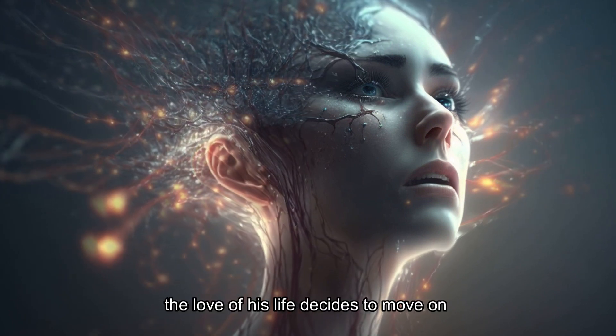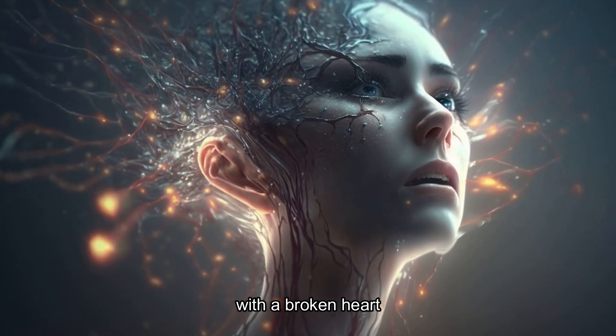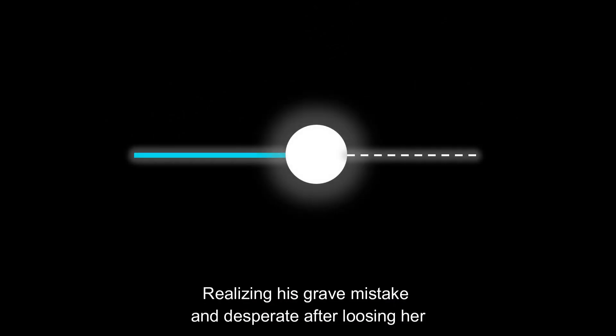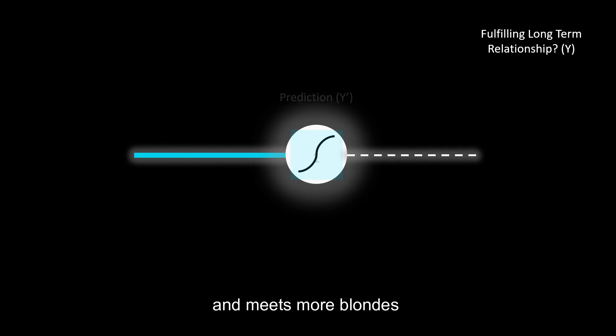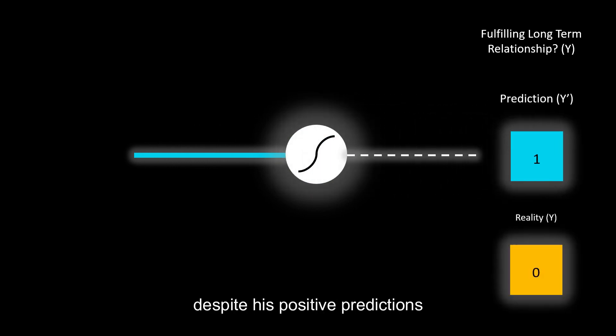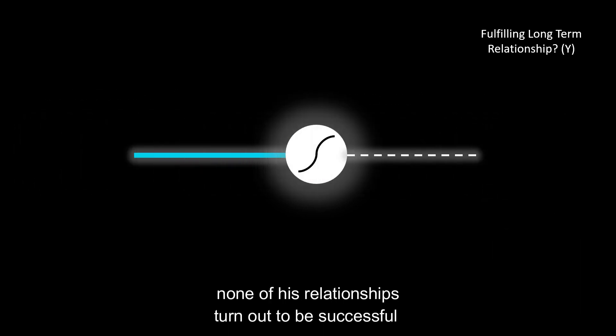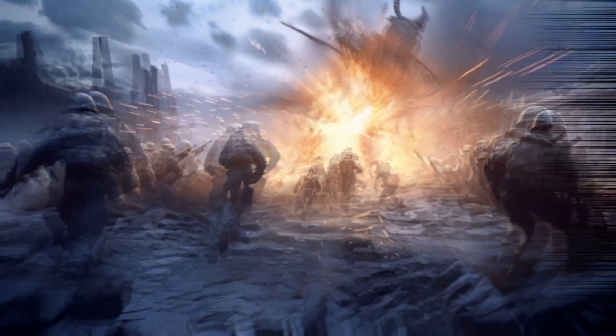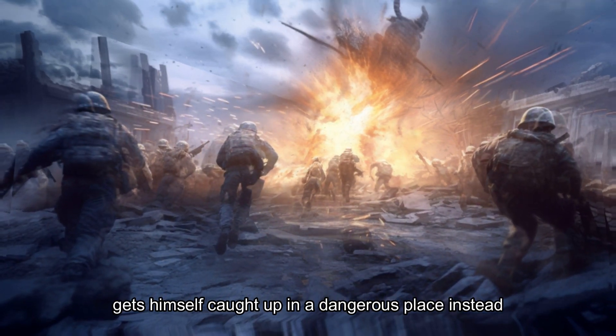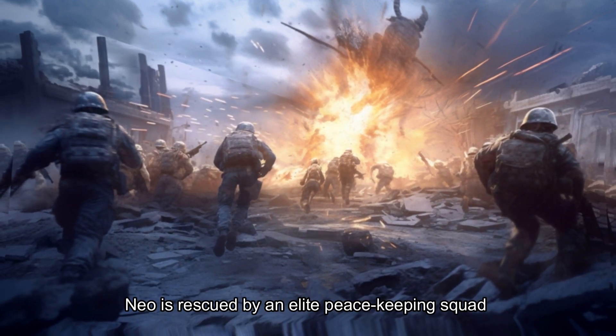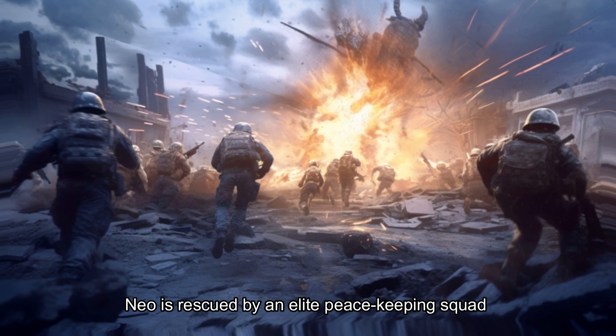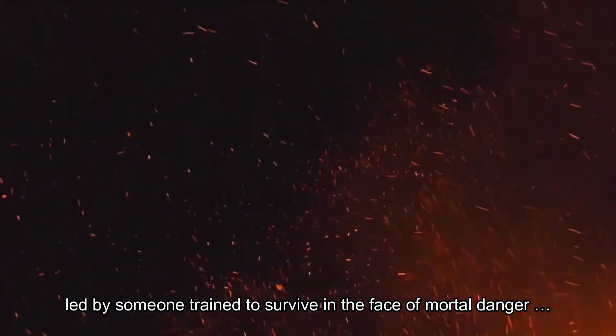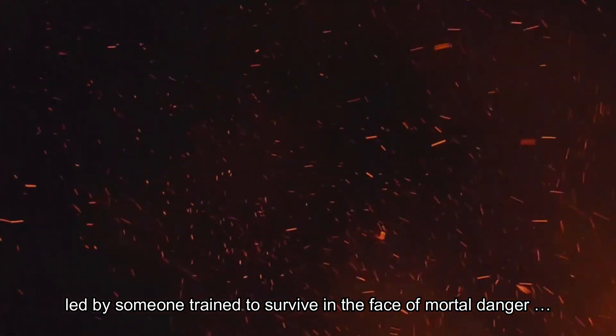Eventually, the love of his life decides to move on. With a broken heart, realizing his grave mistake and desperate after losing her, Neil goes back to the dating market and meets more blondes. But this time, despite his positive predictions, none of his relationships turn out to be successful. Frustrated, he decides to calm his nerves by traveling to distant lands, but in utter ignorance gets himself caught up in a dangerous place. Lucky for him, Neil is rescued by an elite peacekeeping squad led by someone trained to survive in the face of mortal danger.